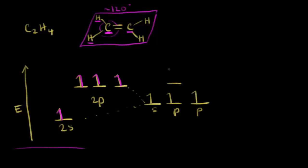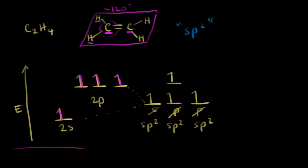Each one of these orbitals has one electron in it. This is no longer an s orbital — this is an sp2 hybrid orbital. This is no longer a p orbital — this is an sp2 hybrid orbital. And same with this one, an sp2 hybrid orbital. We call this sp2 hybridization, because we left a p orbital untouched, so we have a p orbital unhybridized.